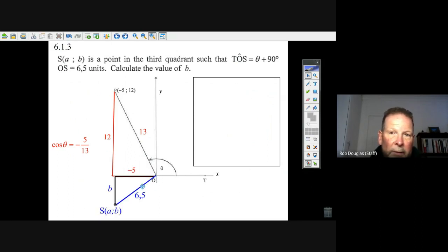I went out 6.5. There's OS. There it ends in AB. I go down B, and I go across A, and they're only interested in B. Well, they say calculate the value of B.